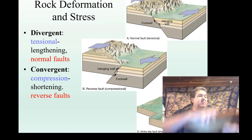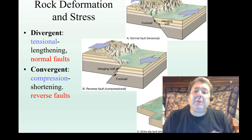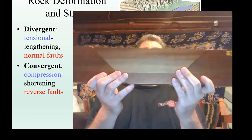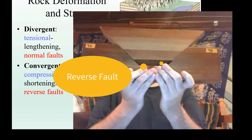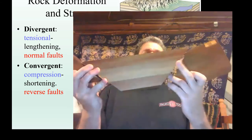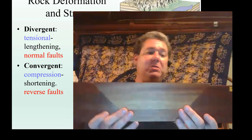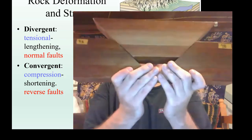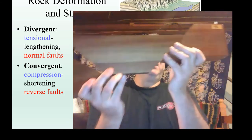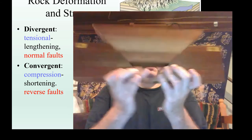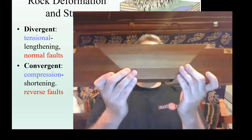The next kind is also a dip-slip fault, and this is the kind we experience at convergent margins with compressional stress. The space issue here is we don't have enough space — we're pushing things together. In order to accommodate that, we're going to have to shorten and thicken. These are called reverse faults when the hanging wall moves up relative to the foot wall. It moves up relative to the foot wall — that is a reverse fault. So: normal faults mean extension; reverse fault means compression.